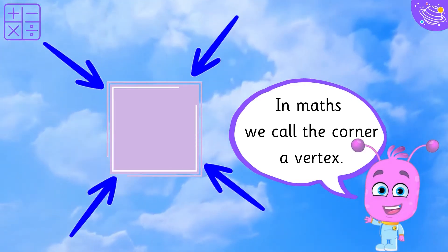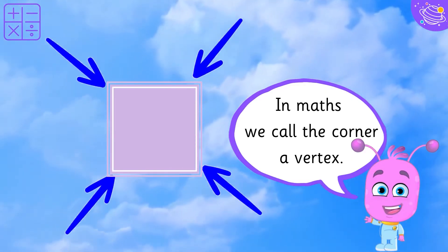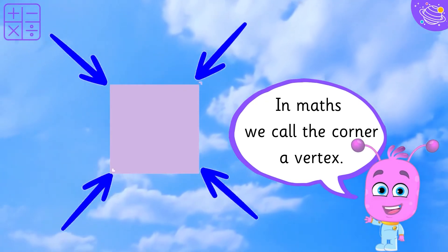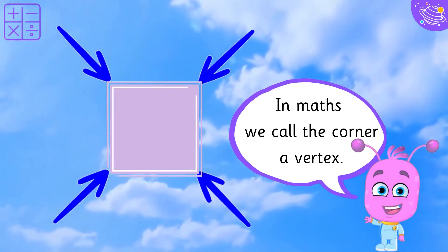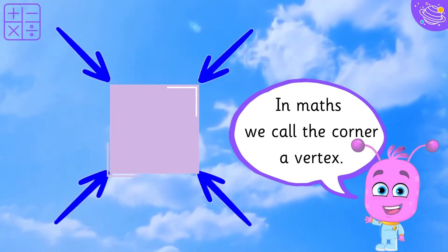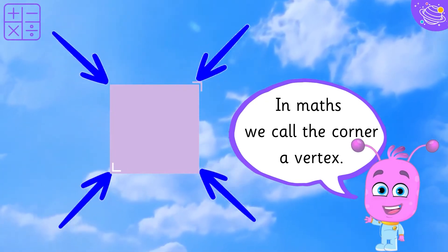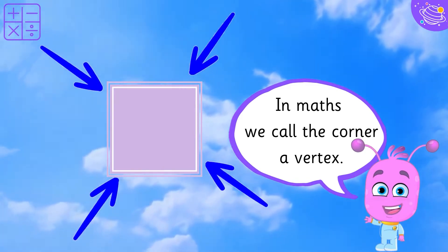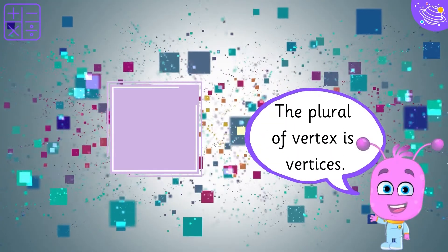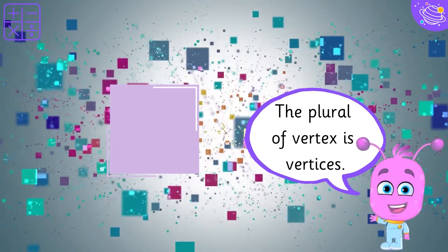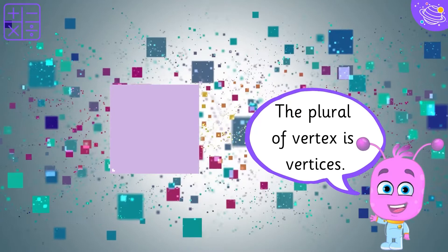In maths, we call the corner a vertex. The plural of vertex is vertices.